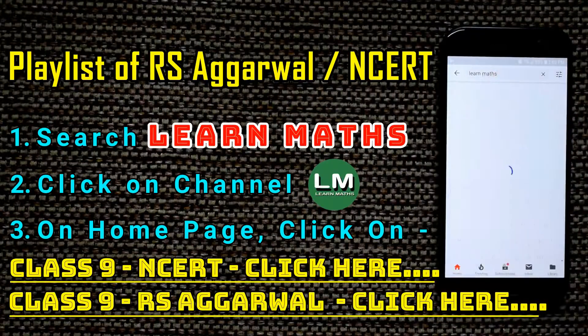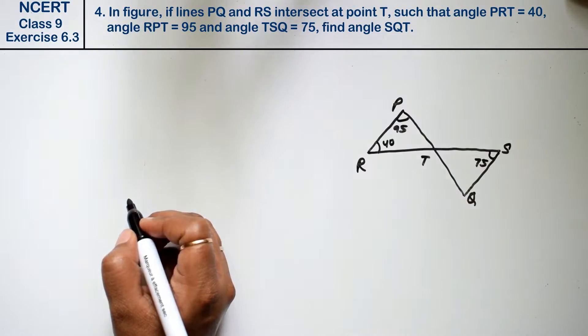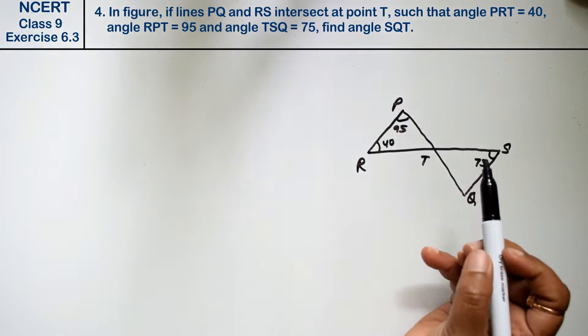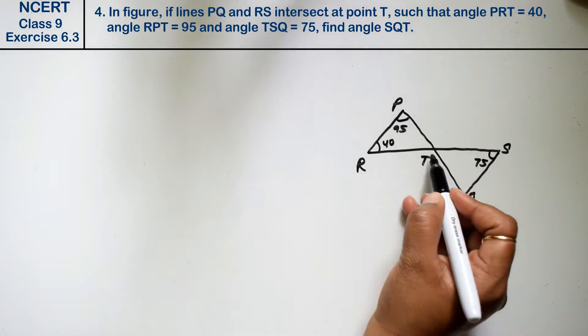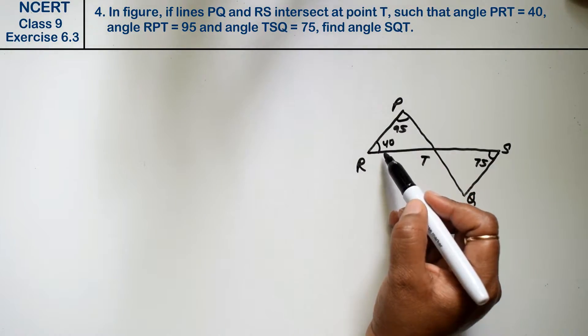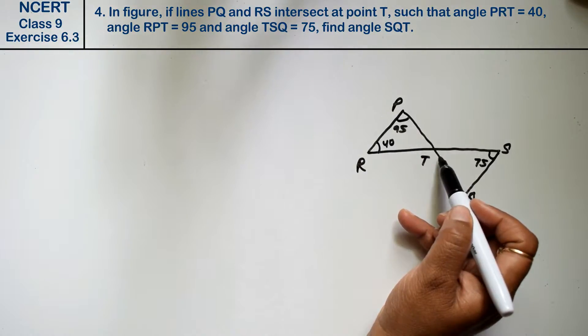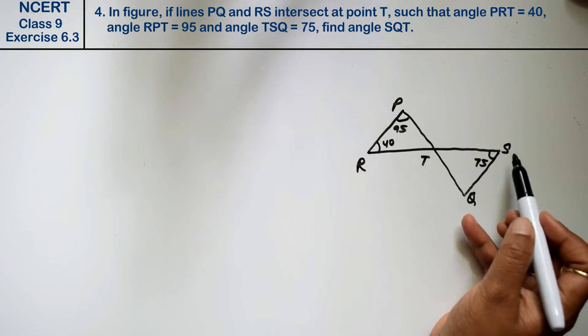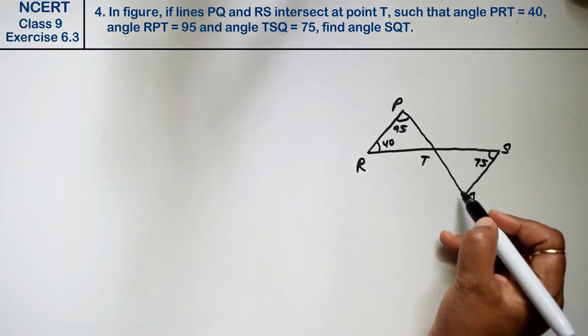Let's do question number 4 of exercise 6.3, that is lines and angles. Question number 4: If line PQ and RS intersect at point T such that angle PRT is 40 degrees, angle RPT is 95 degrees, and angle TSQ is 75 degrees, we need to find angle SQT.